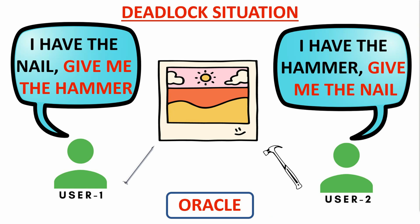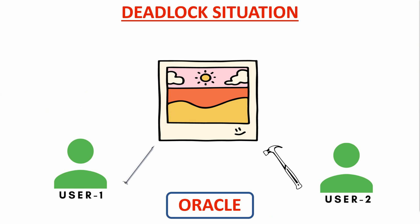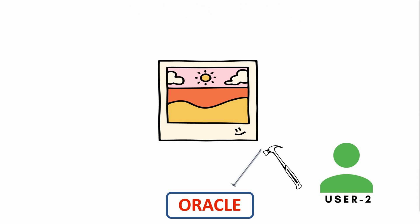Now if our friend whose name is Oracle comes to resolve the situation, it will ask one of the users to go home — usually the one who is waiting for a longer amount of time — then take the hammer or the nail, whatever the person leaving had, and give it to the other user to complete the job. This is the most effective resolution of the problem and Oracle takes care of this very well. So when a deadlock situation happens in the database, Oracle will take care of it automatically and we don't have to worry about it. The only thing we need to worry about is to investigate why the deadlock happened, and we do that by analyzing the deadlock graph in the trace file generated by Oracle on that deadlock situation.